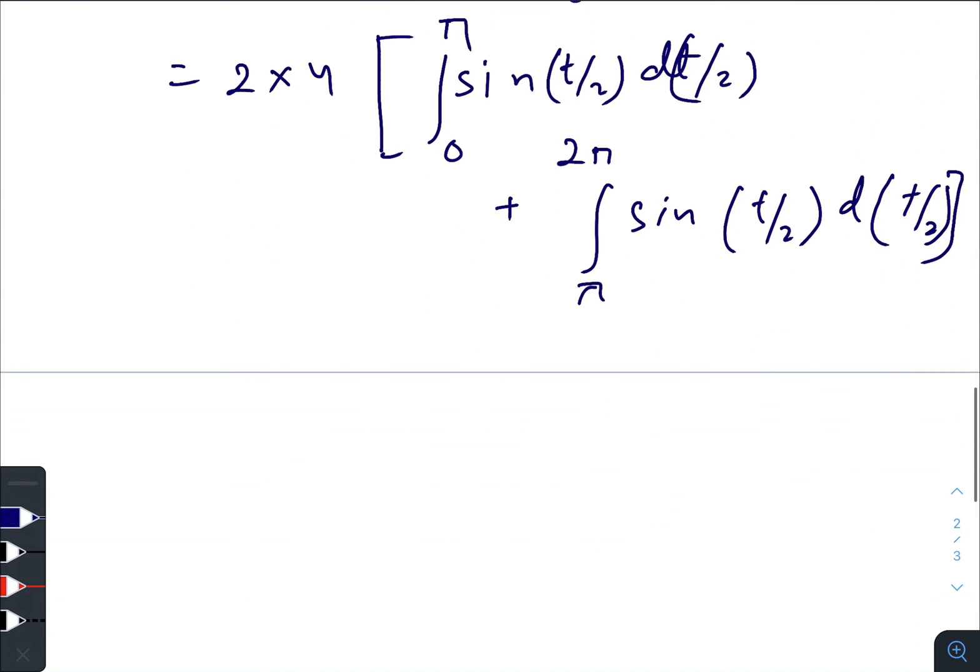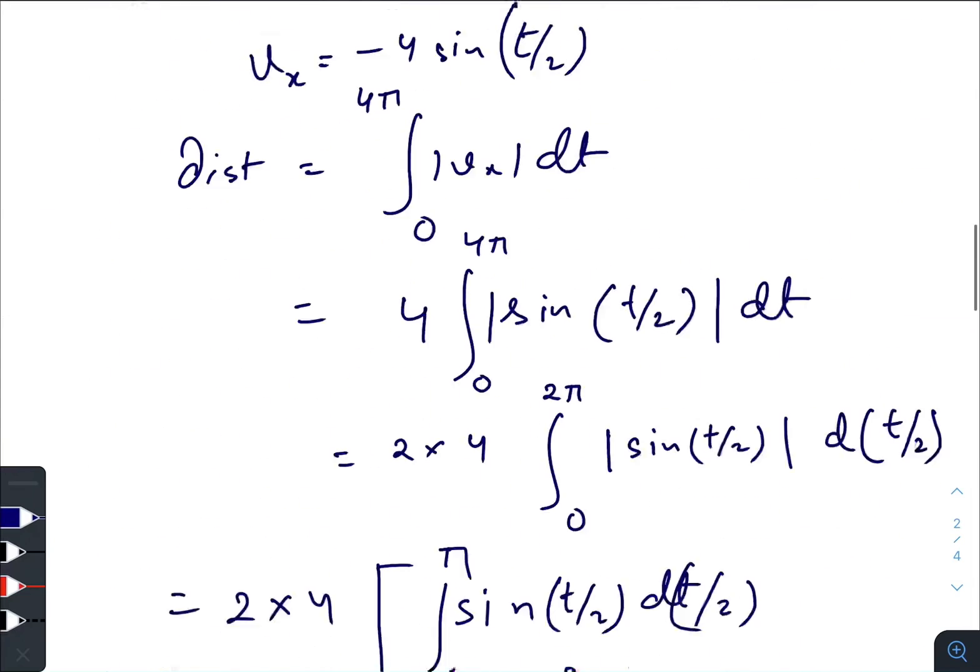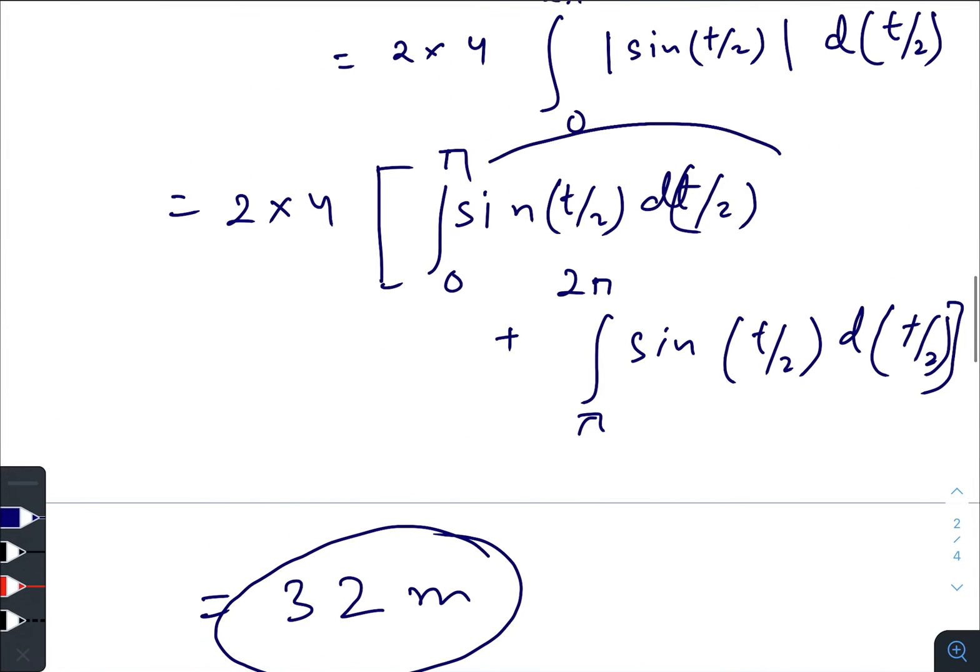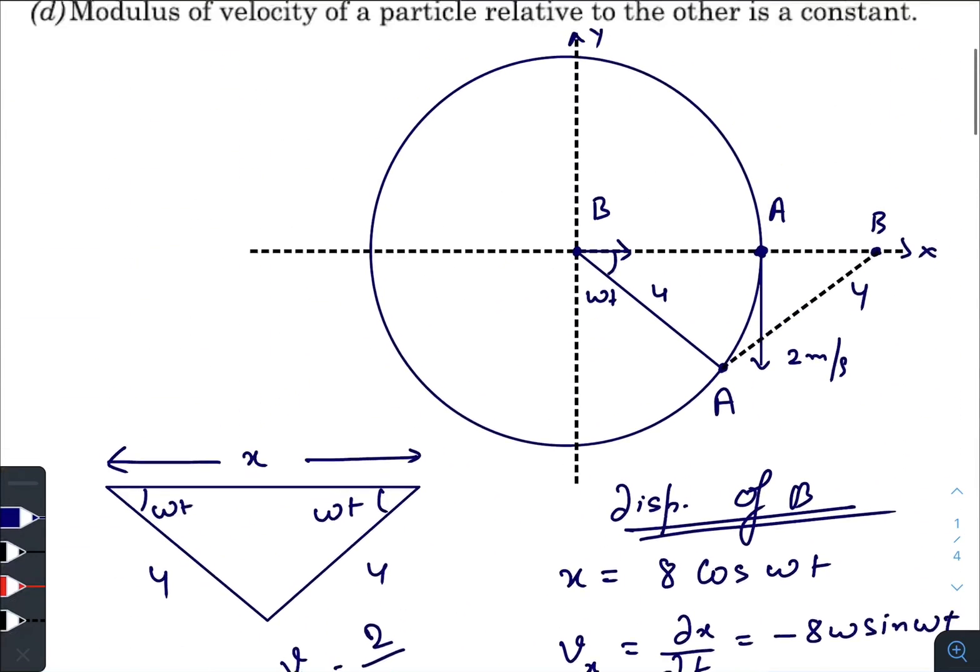Now if you calculate the whole integration, you will get 32 m. Because from here you will get 2, and from here also you will get 2, so 4 × 8 = 32. So option C is also correct.